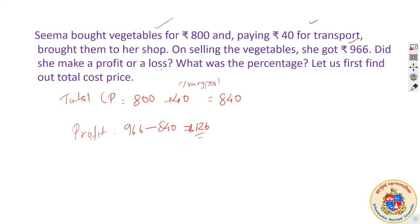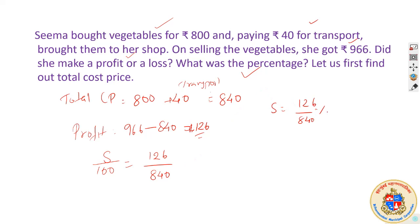Is it profit or loss? It is profit because she is getting more money. And what is the percentage of profit? There are two ways of doing it. The simplest way: she got Rs. 126 by investing Rs. 840. Using the earlier method, let S be Sima's profit per Rs. 100 — how much will it be if she gets Rs. 126 by investing Rs. 840? S is equal to 126 upon 840 into 100.